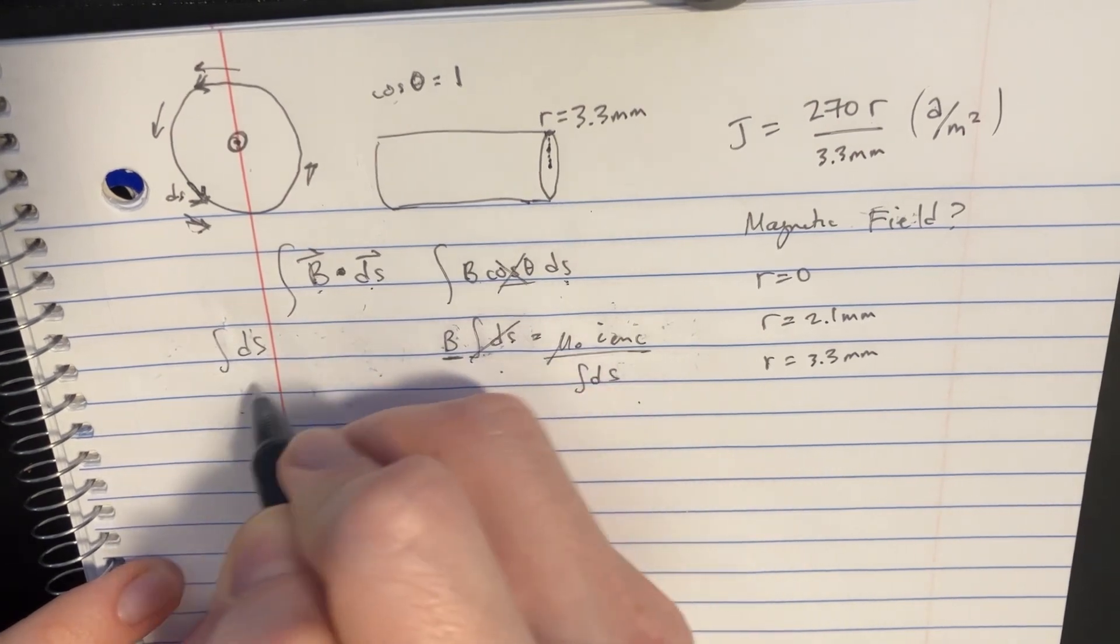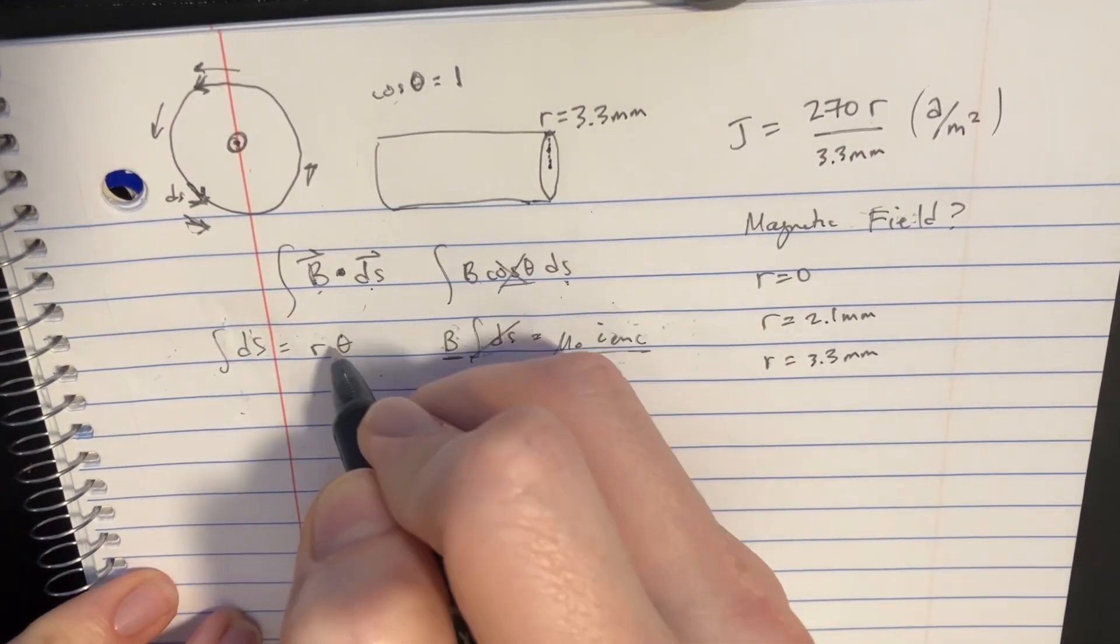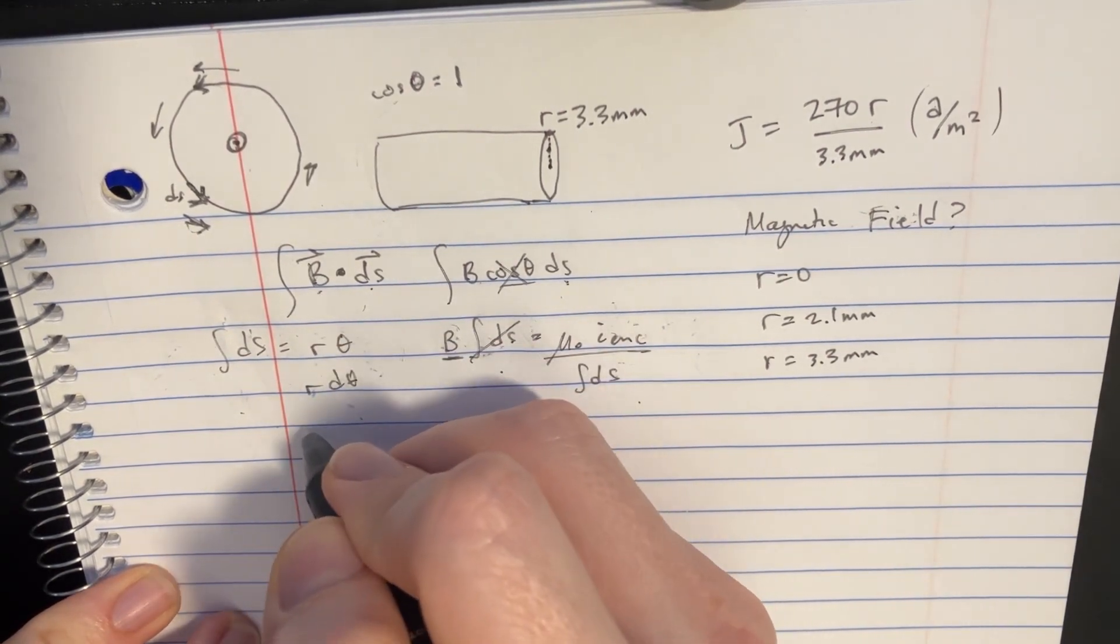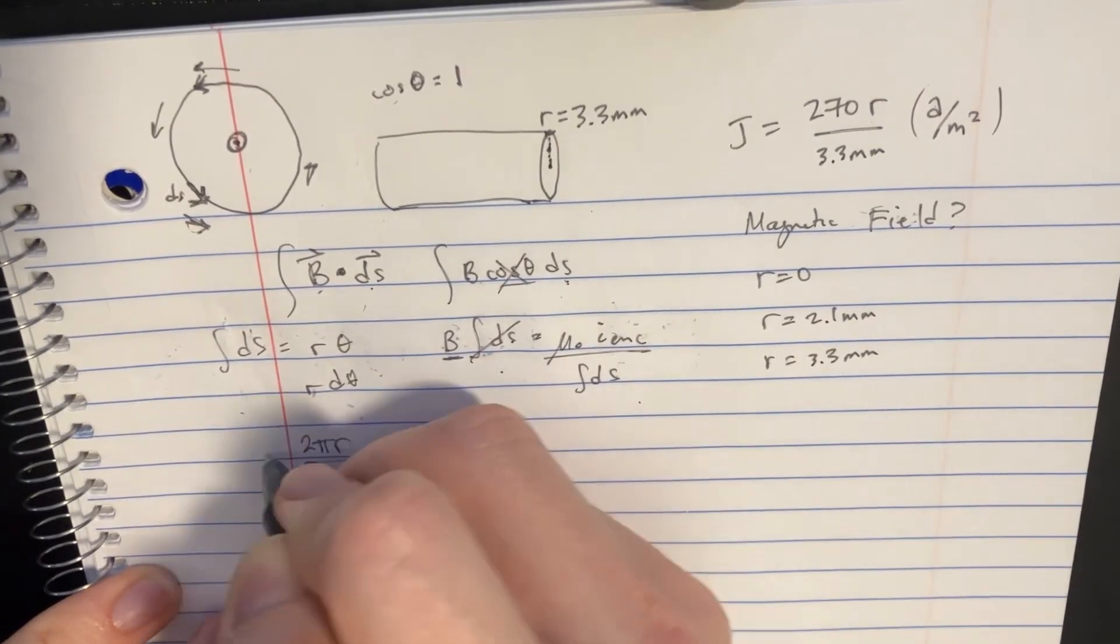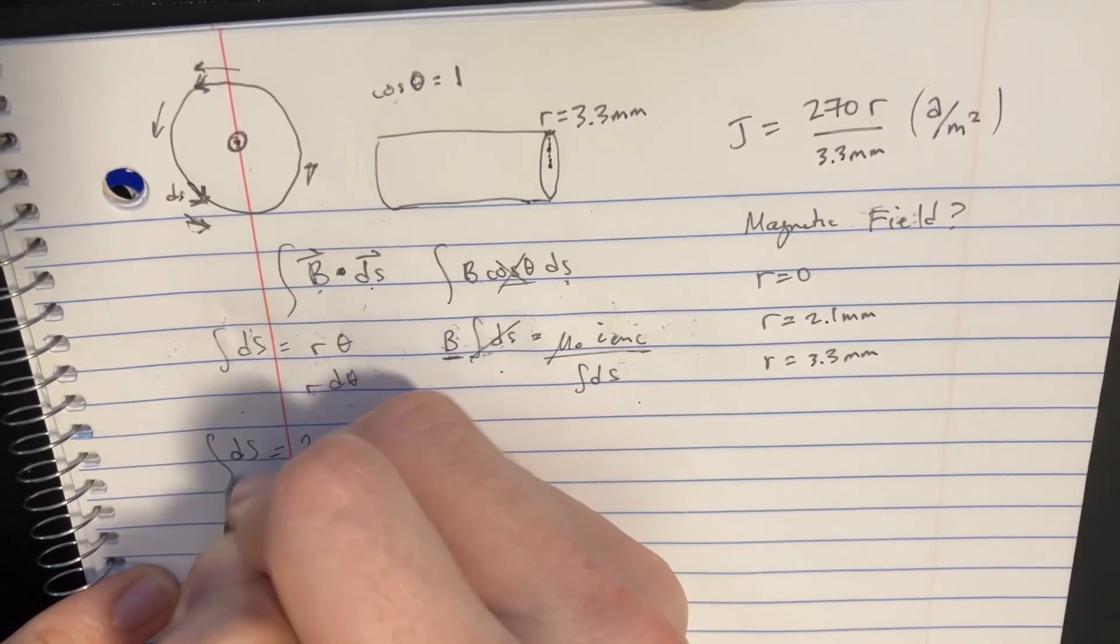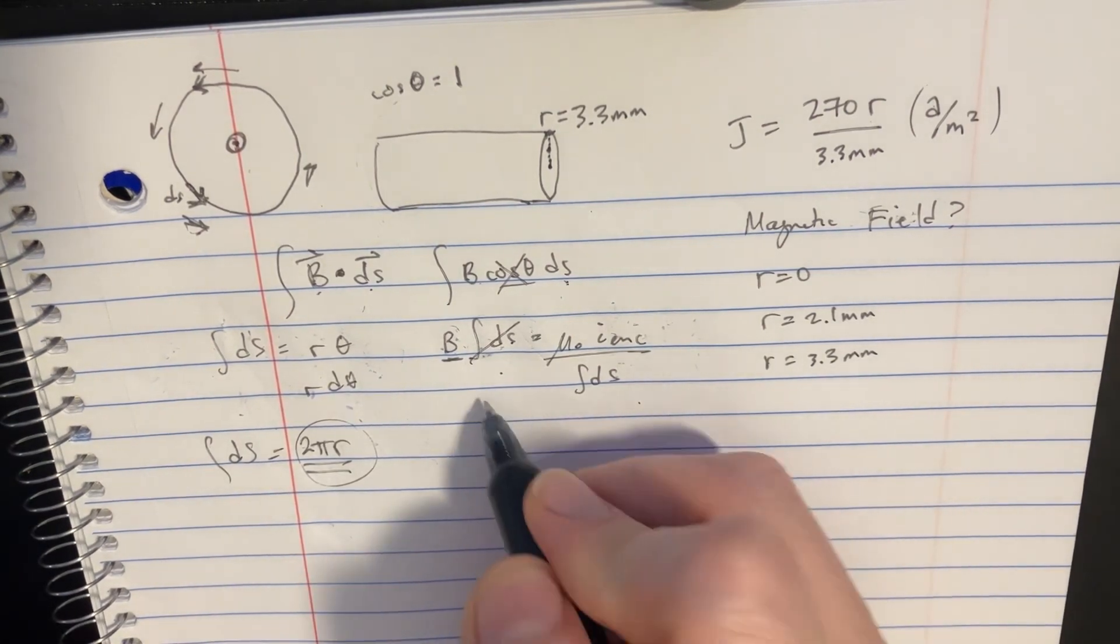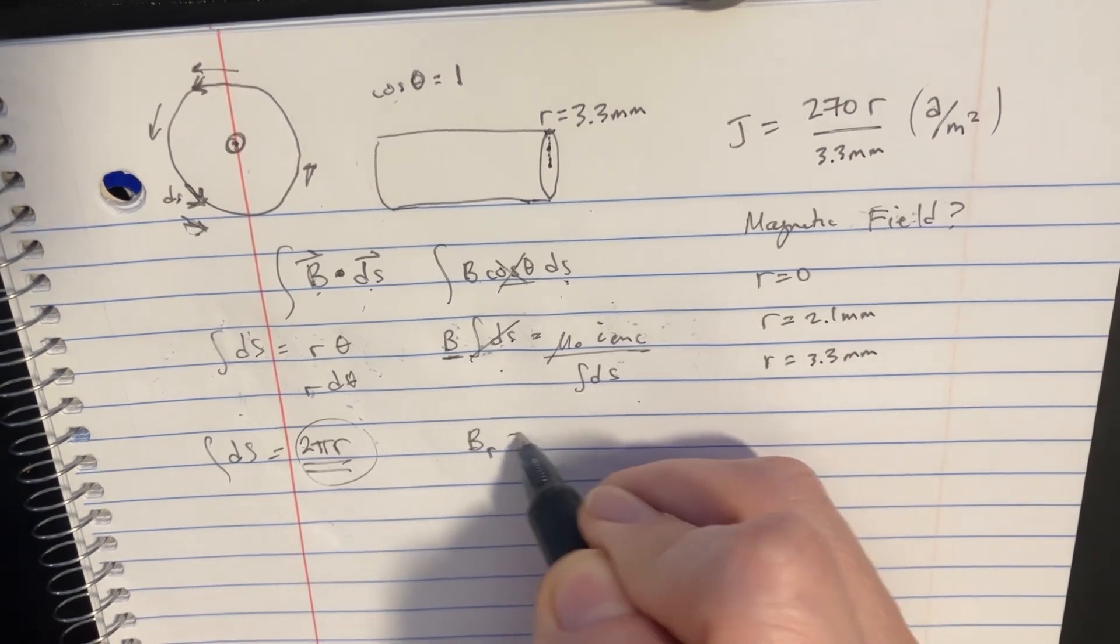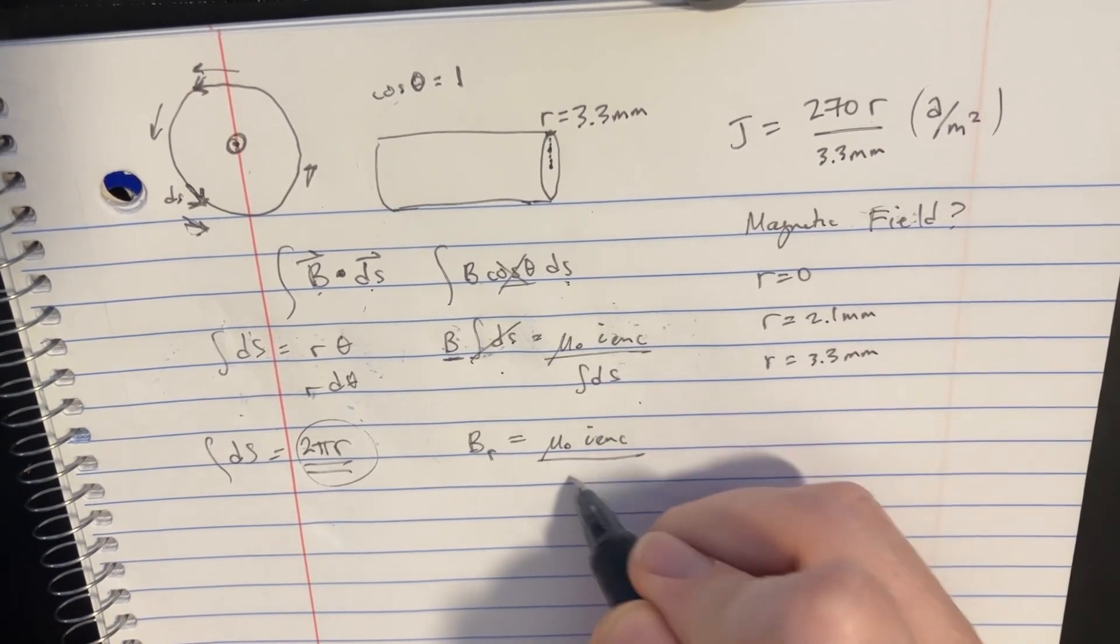And in order to integrate ds, we know that it's supposed to be like r theta, right? And it would be r d theta, and that means that we would say it's like 2 pi r. That's what the ds integral would be. So we can use that in these equations over here. We'll say B at whatever particular radius is equal to mu naught i enclosed divided by the 2 pi r.